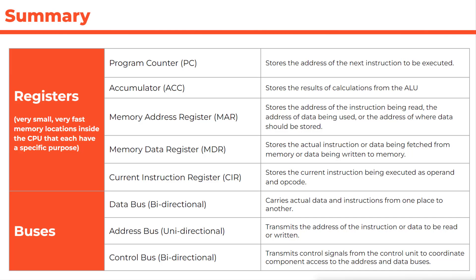There are three different types of buses. The data bus is bi-directional, meaning data can flow both ways, carrying actual data and instructions between locations — the MDR uses it to travel between CPU and RAM. The address bus is unidirectional, transmitting the address of the instruction or data to be read or written. The control bus is also bi-directional, transmitting control signals from the control unit to coordinate component access to the address and data buses.